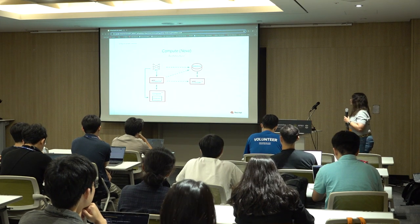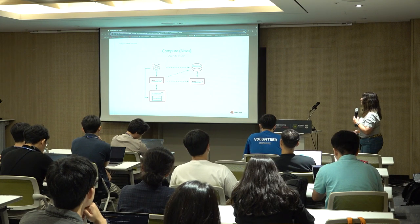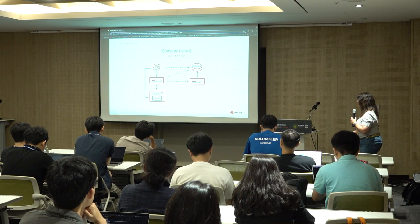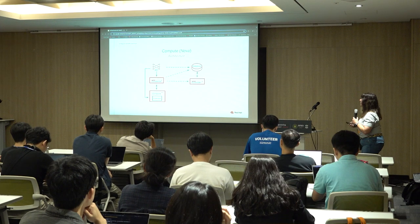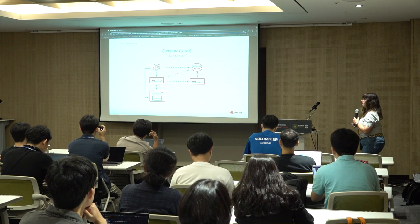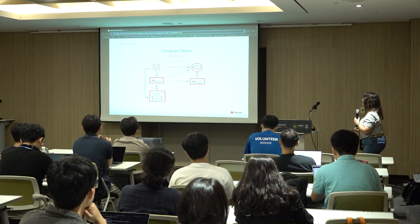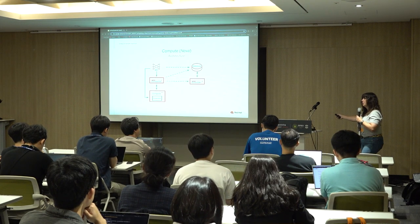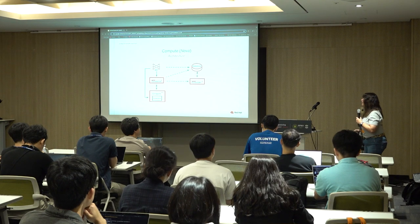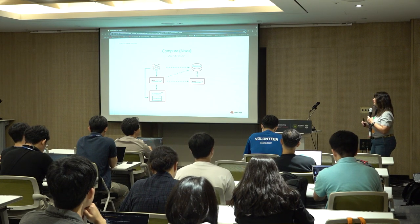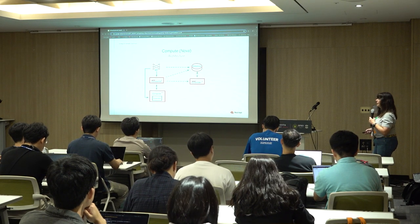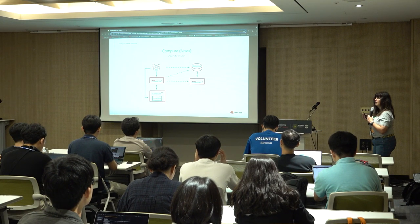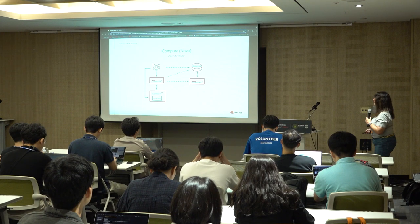The Nova architecture: you have an API which talks to the conductor, and the conductor then talks to the compute. The API can directly talk to the compute and the hypervisor. For security reasons, the API doesn't always talk to the database anymore — that is the job of the conductor. The conductor also talks to the scheduler, which determines which compute node has space for a new VM. Placement does this to a finer degree, and with placement came Cells V2, which allows you to have bigger infrastructure by dividing things into different cells.